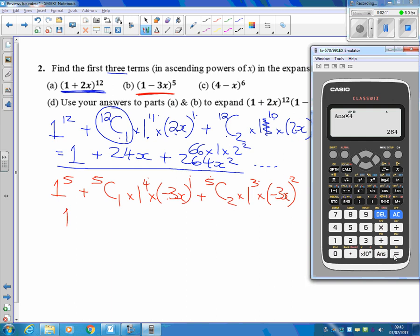Working that out, 1 times 1 times 1 times 1, but 5 times makes 1. Here I've got 5 times by minus 3, so I've got minus 15x's here. 5 choose 2, 5 choose 2 is 10, so I have to check out my calculator.